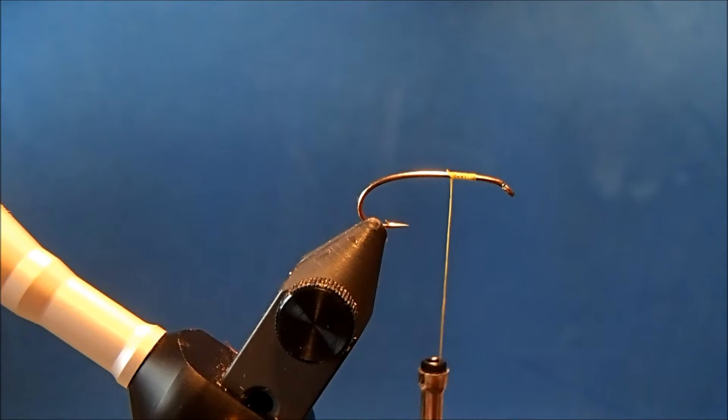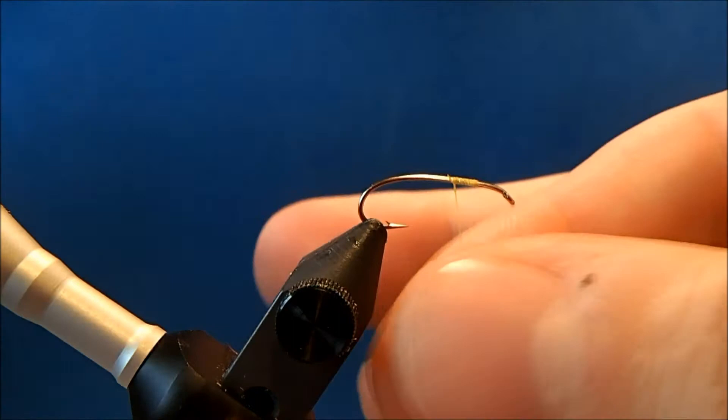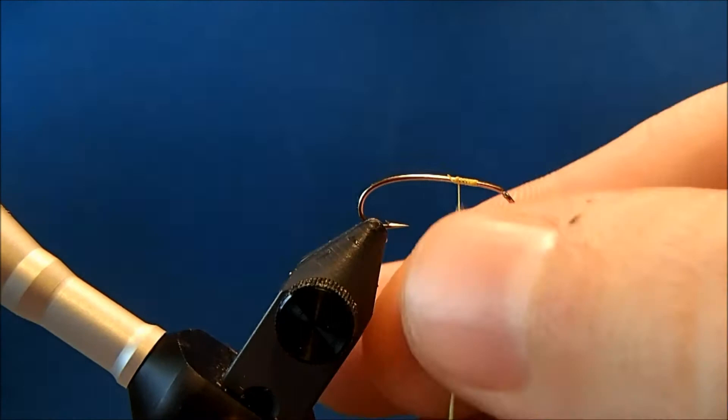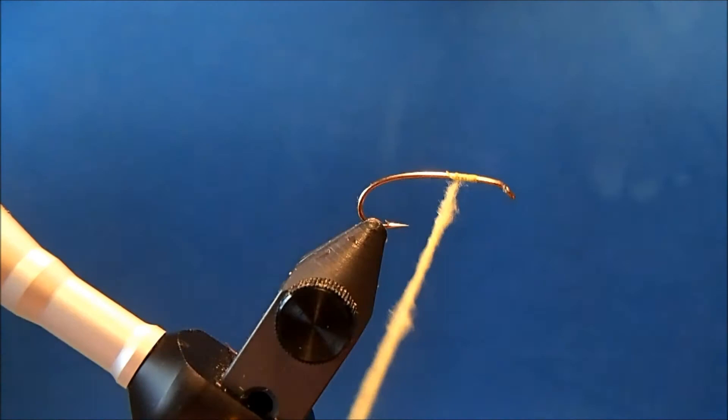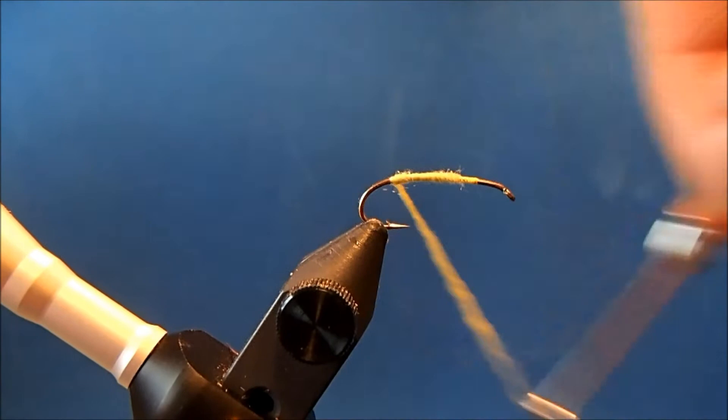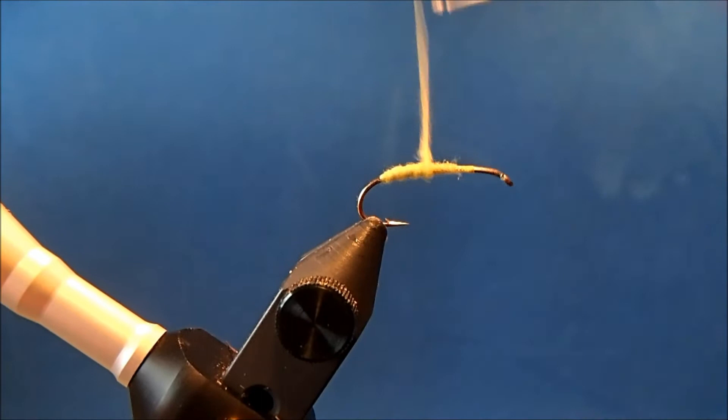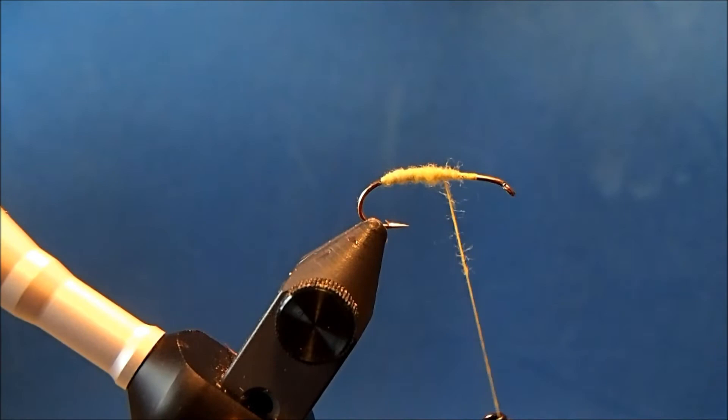The body for this is going to be a dry fly dubbing and I'm going to use a light olive to dub this body. I'll put a slight taper in this so I'll go down to the barb in the hook and then back up to that thread point. So down to the barb and then back up, and I'll continue to work out this taper.